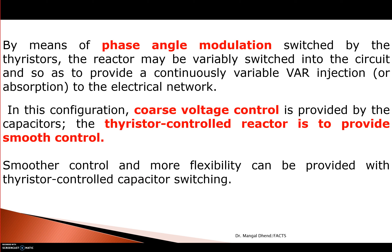By means of phase angle modulation you can control the phase angle of TCR and have variable power absorbed from the system. TCR power can be varied by controlling angle alpha. In this configuration, coarse voltage control is provided by the capacitor — it will be step control, not smooth variation. TCR will provide fine, smooth control. Smoother control and more flexibility can be provided with thyristor controlled capacitor switching.